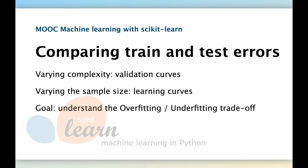Welcome back. Let's now consider how we can quantify the trade-off between overfitting and underfitting by measuring and comparing the train and test errors of our model on a specific machine learning prediction problem. More precisely, we will consider how those train and test errors vary when we change the complexity of the model and also when we change the size of the training set.